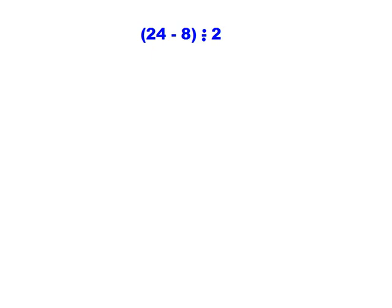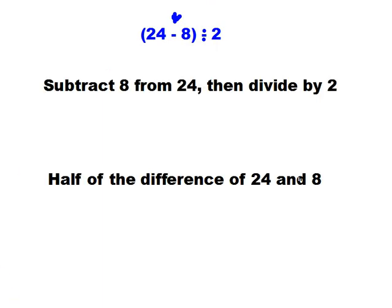Here's another one for you to try in your notebook. Go ahead and stop the video and give that a try. We've got two things going on: a difference happening here, and it has to happen first because it's in parentheses. Then we're going to take that difference and divide it by 2. One way I might have written it: subtract 8 from 24, then divide by 2. Another way: half of the difference of 24 and 8, because 'half' is a signal word that means divided by 2. They both work, and you might have even found a different way of doing it.